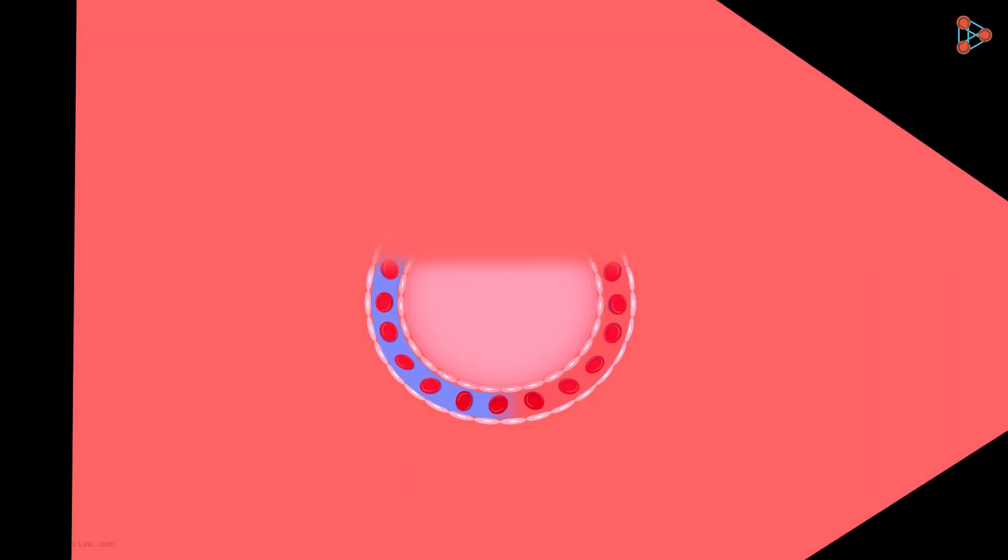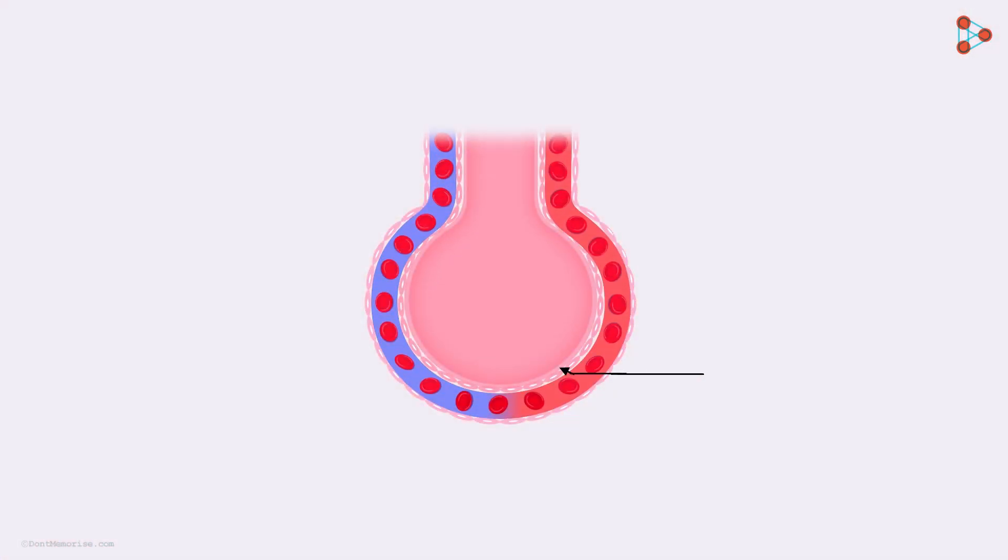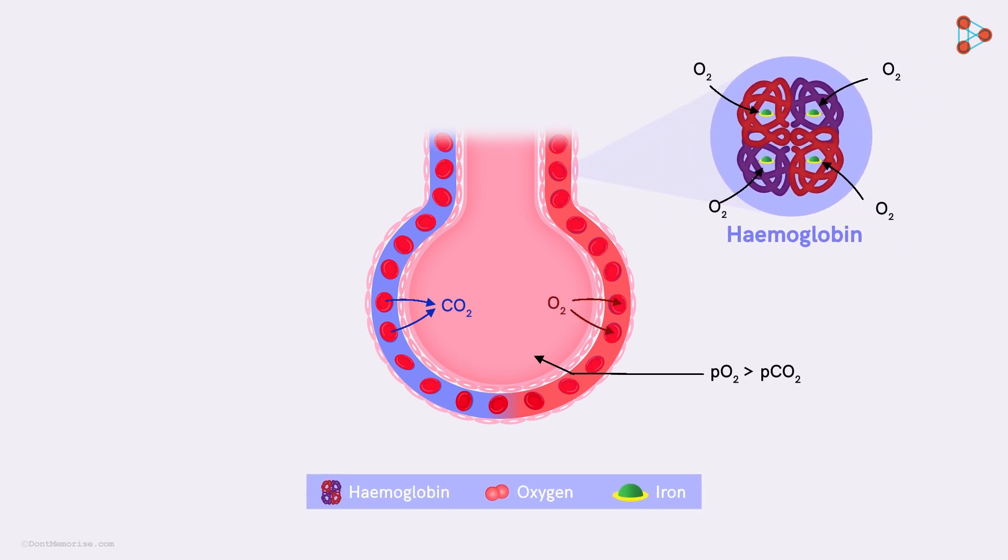Let us begin with what happens in the alveoli. Here, the partial pressure of oxygen is greater than that of carbon dioxide. Thus, the carbon dioxide molecules are made to leave the hemoglobin, and oxygen occupies the place.